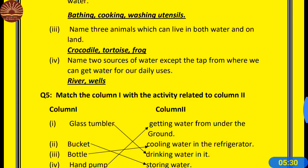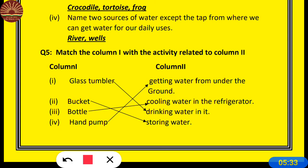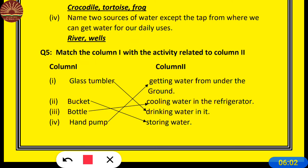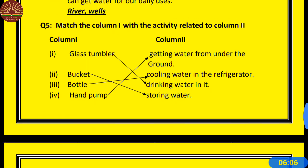Number 4: Name two sources of water except the tap from where we can get water for our daily uses. Except means athritic — so here are two sources of water.